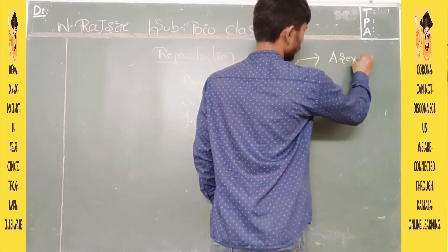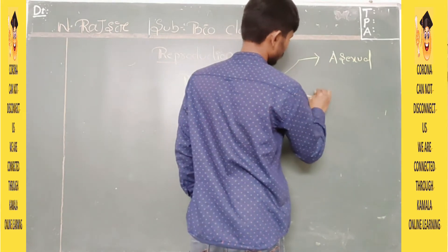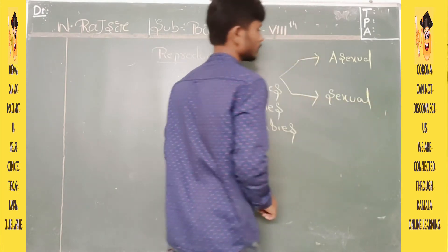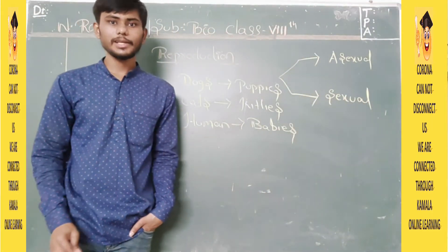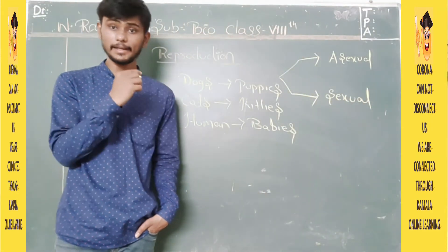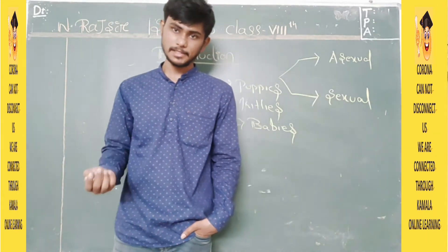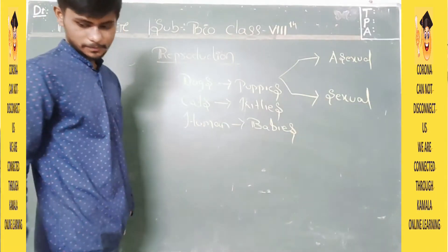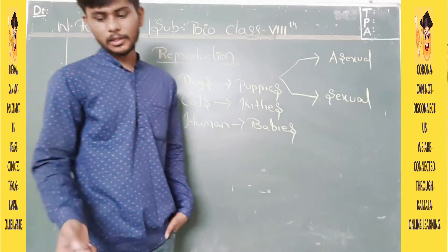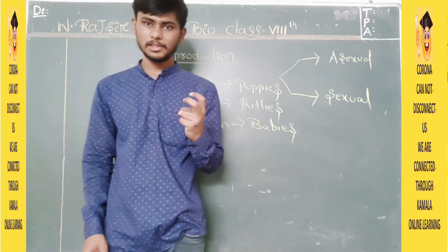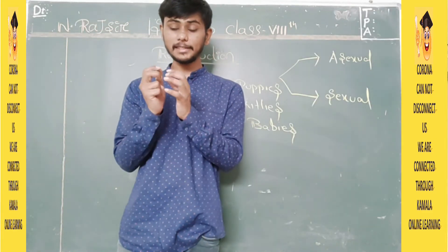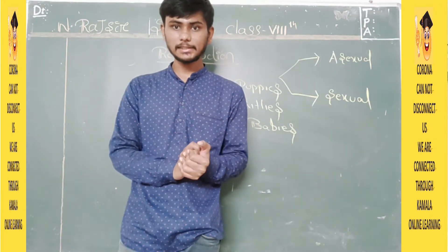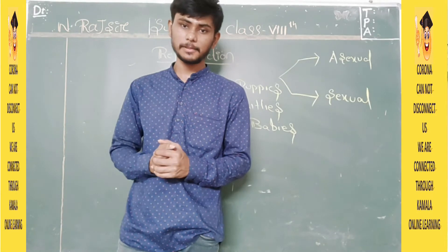Animals also reproduce in both processes. The first is called the asexual mode of reproduction, and the second is called the sexual mode of reproduction. I will explain both of them, and along with that we need to go through the human reproductive system. Before that, let me give you an explanation of the main concepts of this chapter.